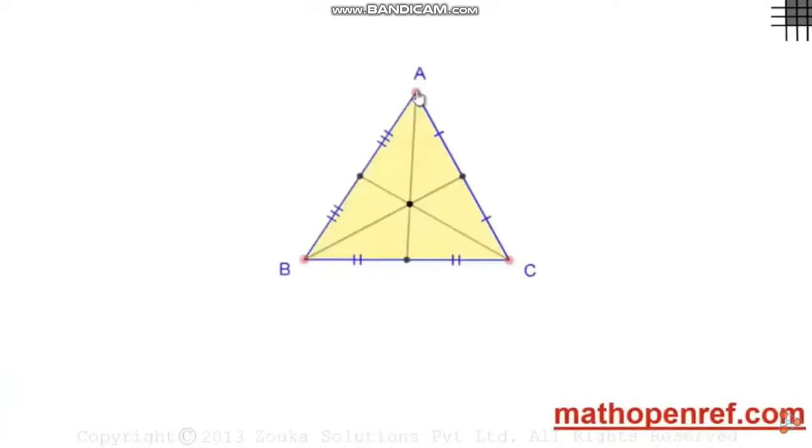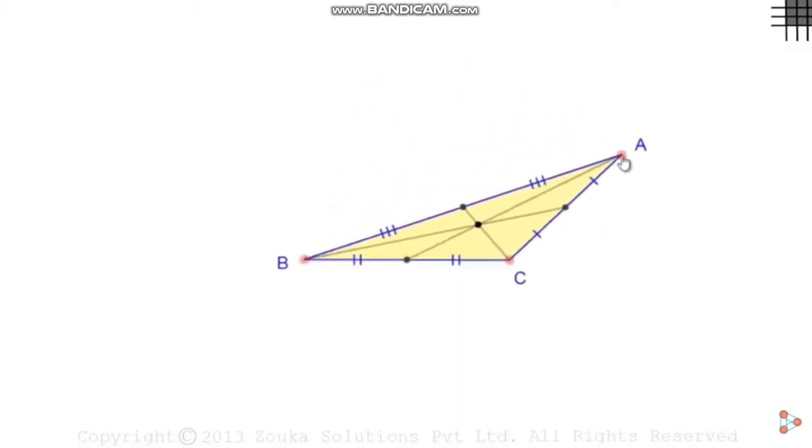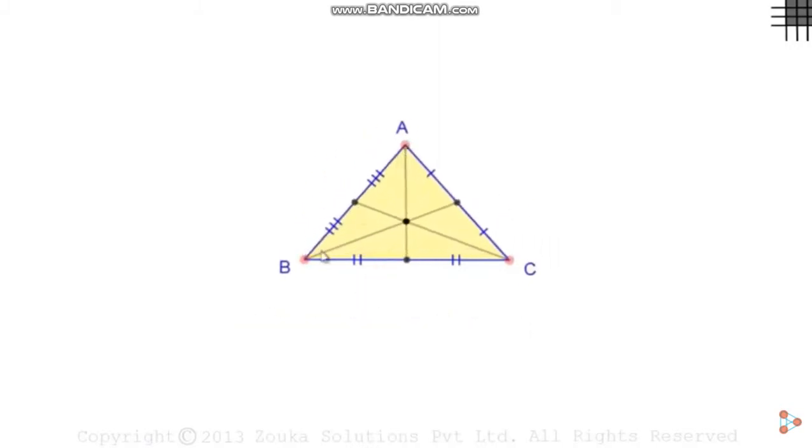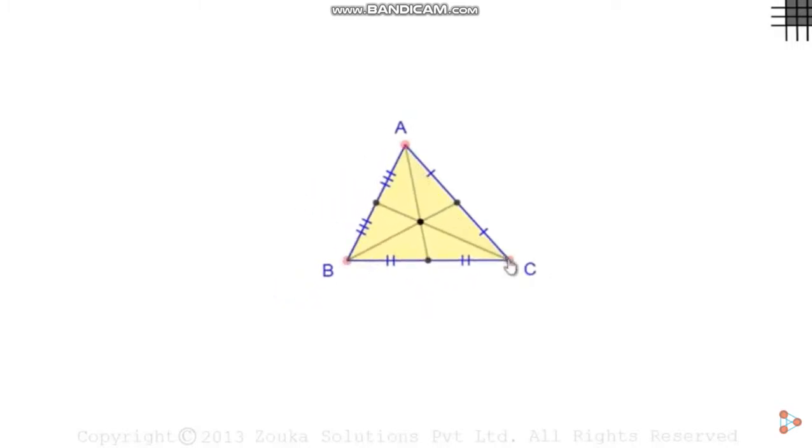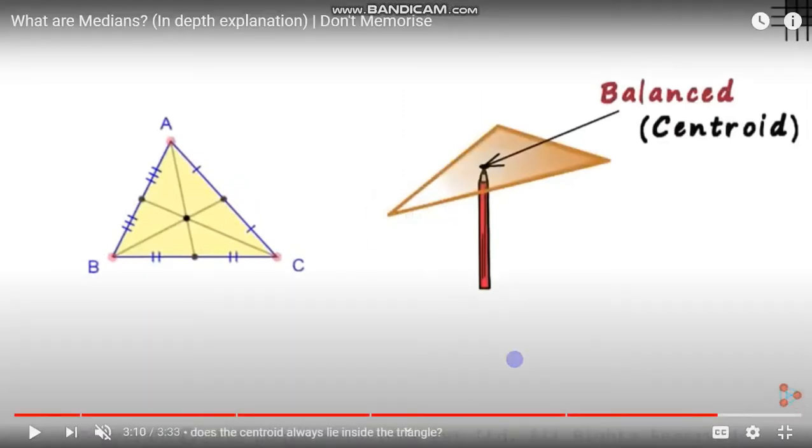This can be demonstrated with an interactive geometry program. If we change the shape and size of the triangle by moving any vertex around, no matter how we move it, the centroid always lies inside the triangle. The centroid will always be inside the triangle.